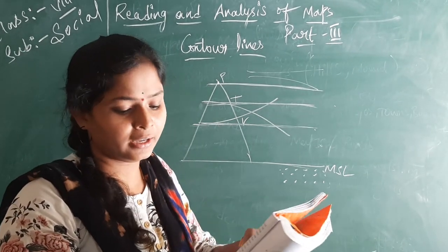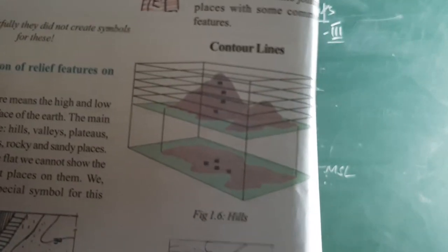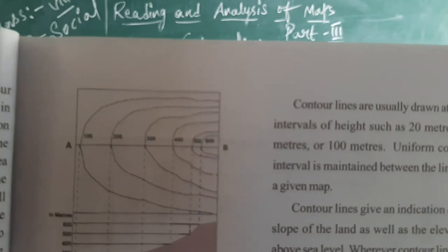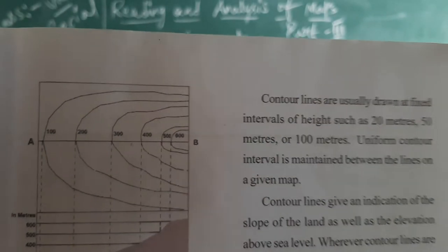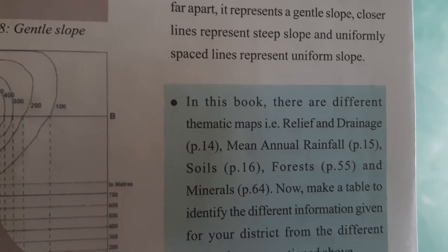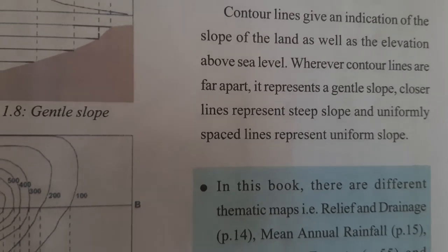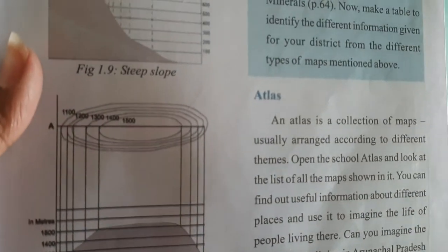Next is representation of the relief features on the map. Here you can see the hills. On the map, how we will see the hills — in this way. Like V-shaped valleys, map with the density of the patterns. Next, coming to gentle slopes. These are known as gentle slopes — here you can see the contour lines. Height such as 20 meters, 50 meters, 100 meters — they calculate in that way. Coming to steep slopes — gentle slopes are closer, lines represent a steep slope. Uniformly spaced lines represent uniform slopes. They also gave you about the plateaus — how the plateaus will appear. In the atlas, we can find all these things.